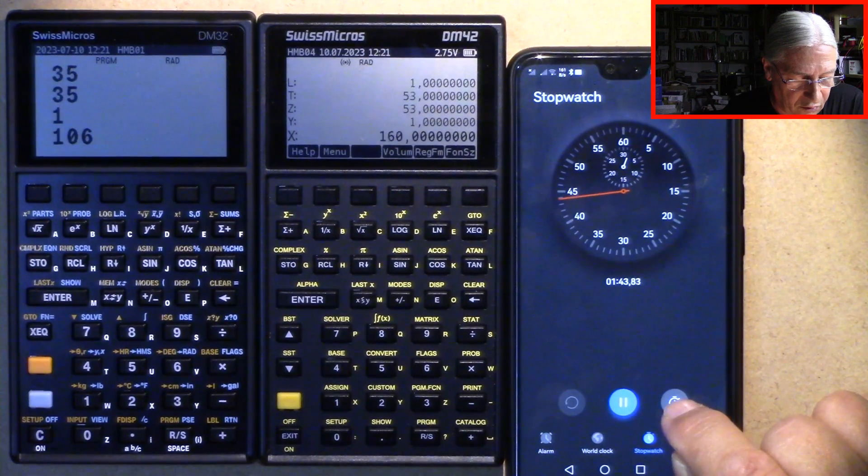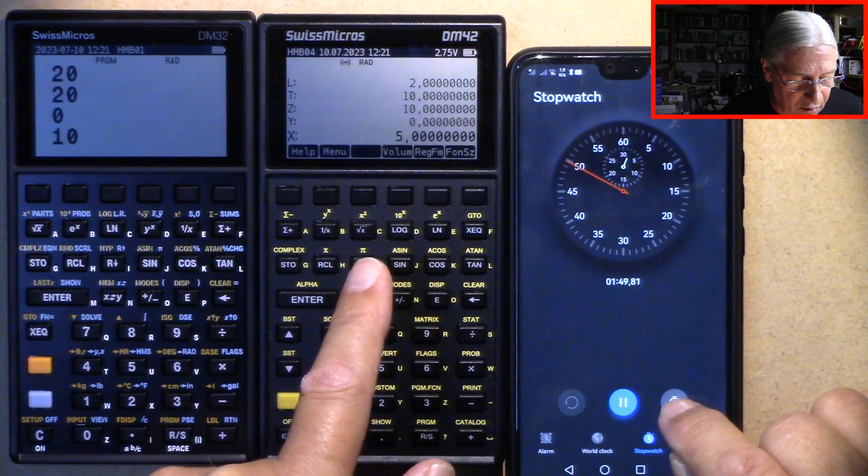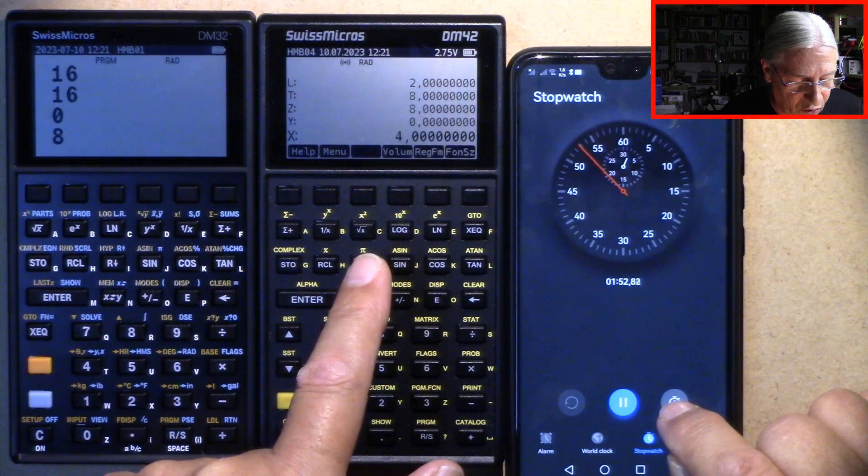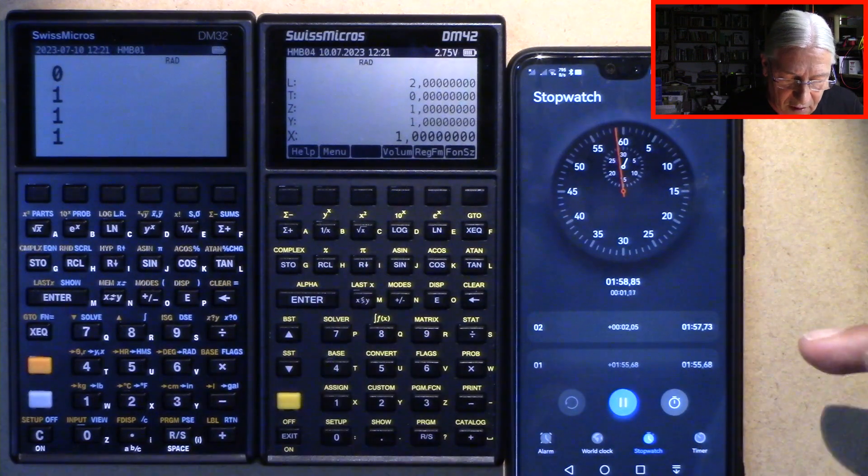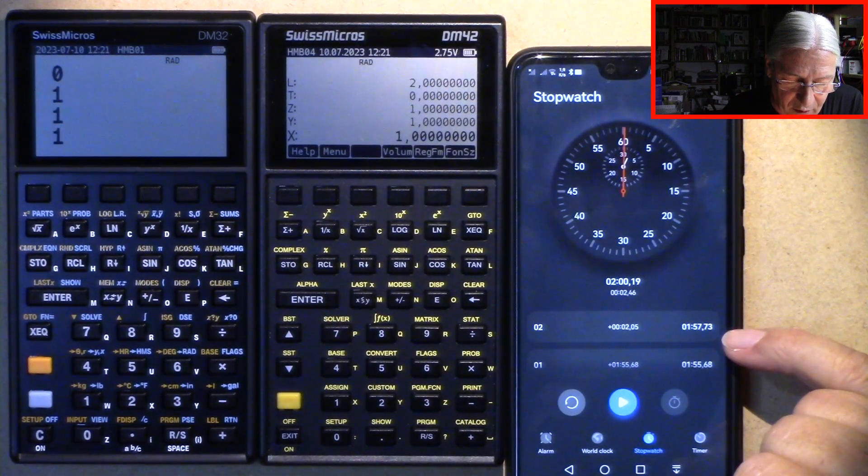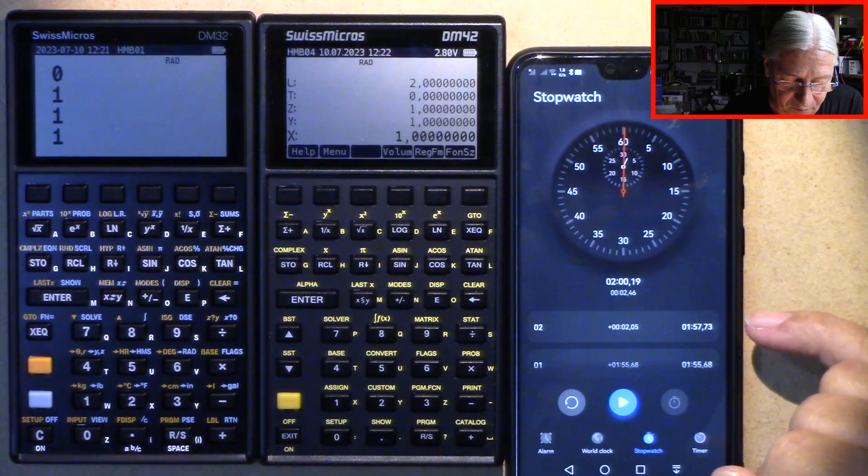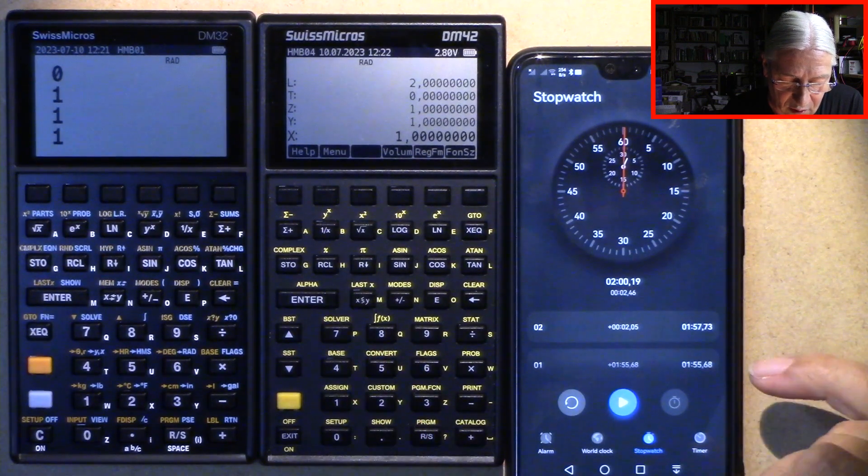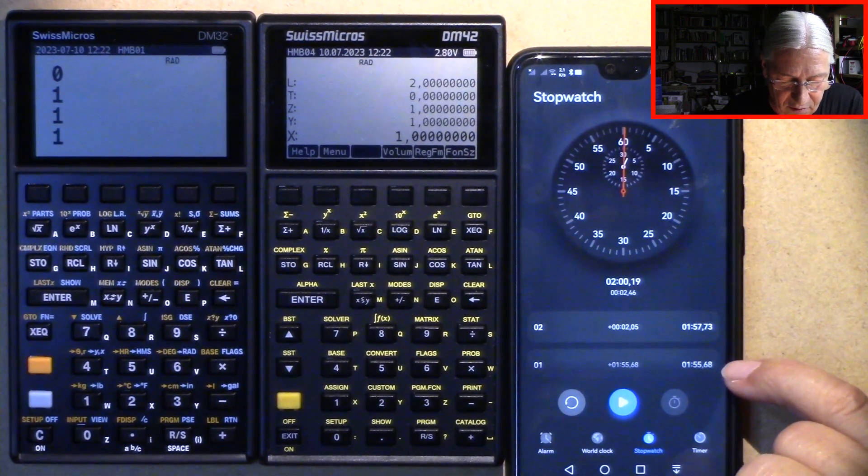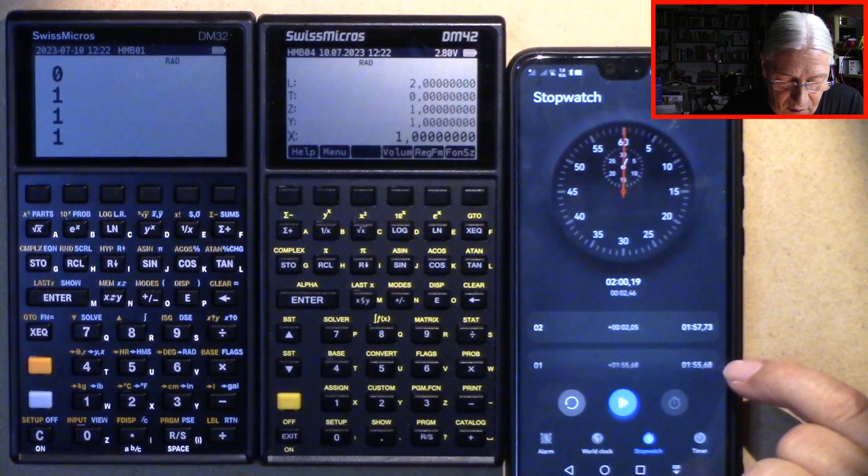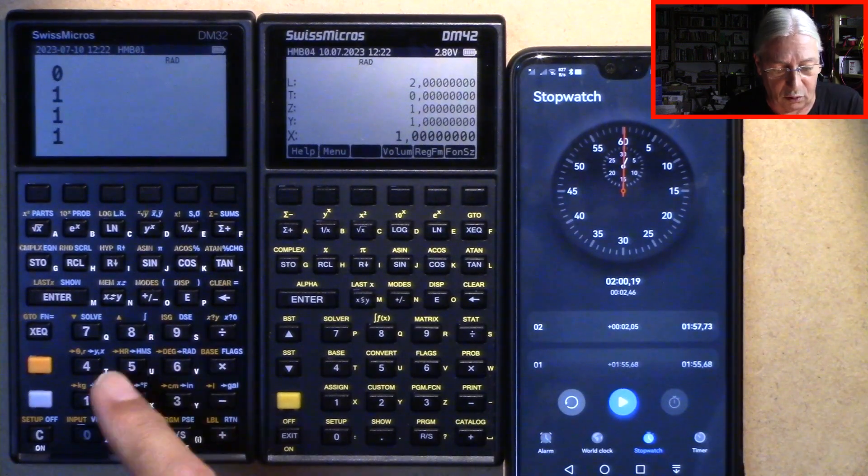So now I have to pay attention. 40, 20, 10, 16, 8, 4, 2, ready, ready. So you see here, we have now 1 minute 56 seconds for the DM42 and just about 3 seconds more on the DM32. So that's quite nice.